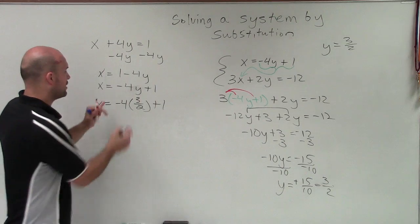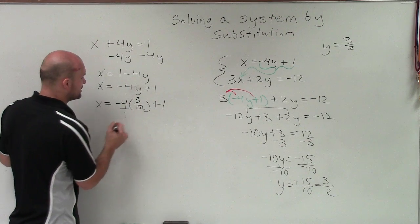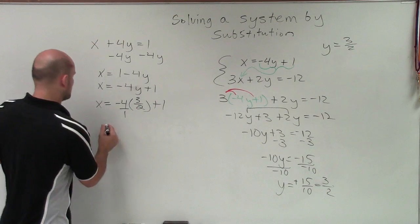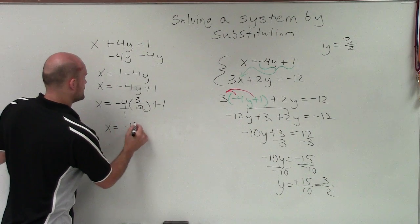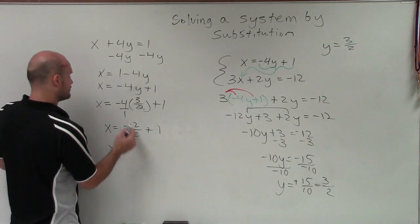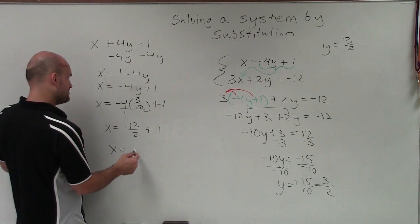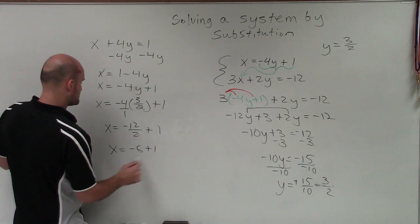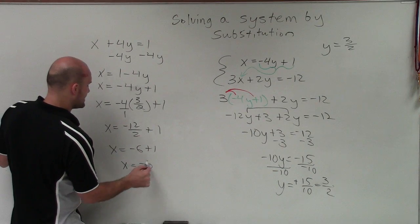Now remember, when multiplying a whole number times a fraction, I can make this into a fraction and then just multiply across. So x equals negative 12 divided by 2 plus 1. x equals negative 12 divided by 2 is going to be negative 6 plus 1. So x equals negative 5.